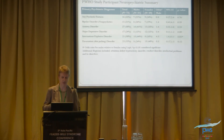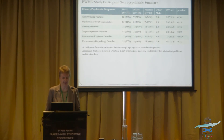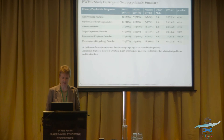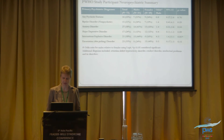Looking more specifically at neuropsychiatric diagnoses, we grouped them into six categories: any psychotic features — meaning any psychotic disorder or bipolar disorder with psychotic features — bipolar disorder non-psychotic, anxiety disorders, major depressive disorder, intermittent explosive disorder, and excoriation disorder, which is skin picking. There was no statistically significant difference between males and females for any category except intermittent explosive disorder, where males were much more likely to be diagnosed than females.